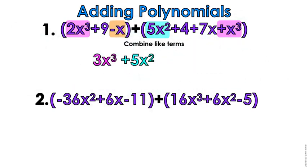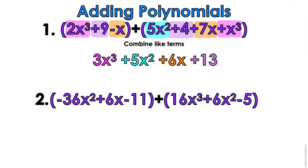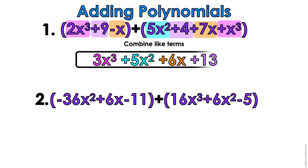And then I have the x's. After cubes go squares, and then after squares go linear terms — that's just the x's. Negative x plus 7x is going to give you a positive 6x. And then last but not least are our constants. We have 9 plus 4, and that's going to give me a wonderful 13.